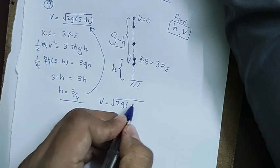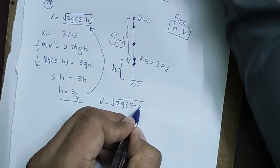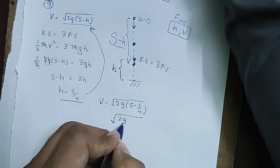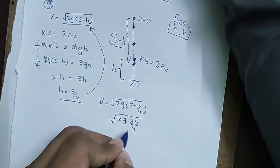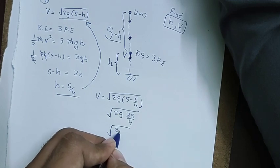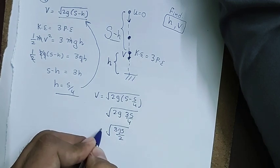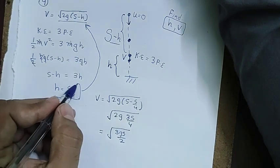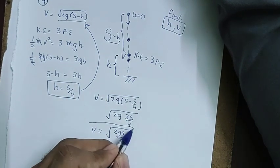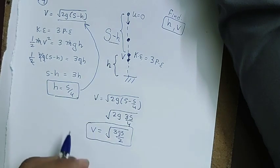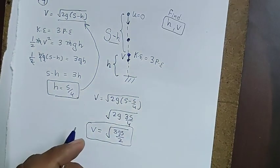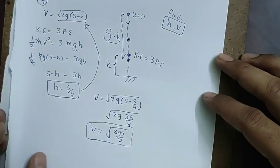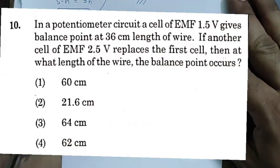Substituting h = s/4 back: v = √(2g(s − s/4)) = √(3gs/2). So h = s/4 and v = √(3gs/2) — option 4.